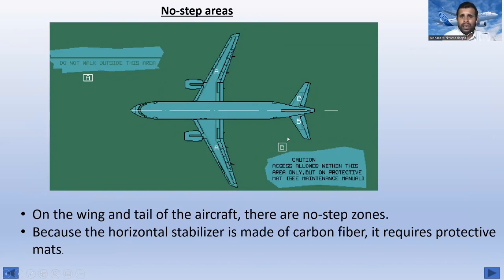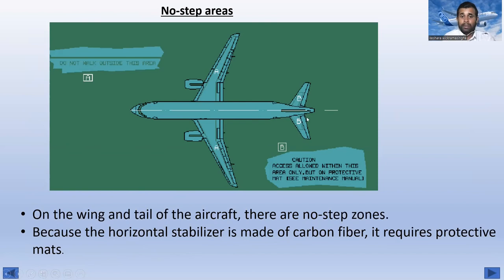Now the no-step areas: on the wing and tail of the aircraft there are no-step zones. Because the horizontal stabilizer is made of carbon fiber, it requires protective mats. The aircraft markings show the non-step areas — personnel access is allowed in these areas only with protective mats in place, as per the maintenance manual.